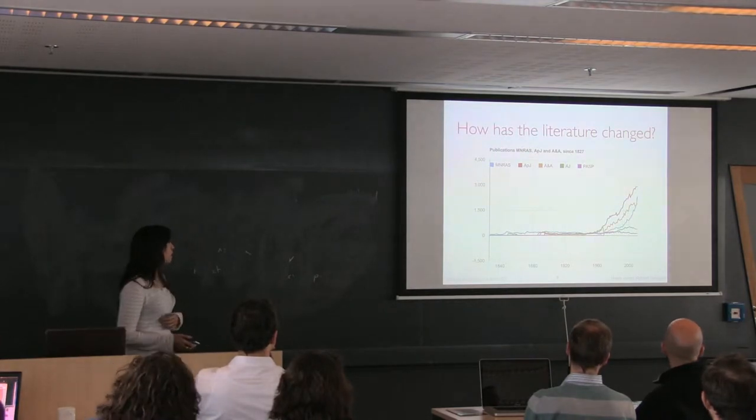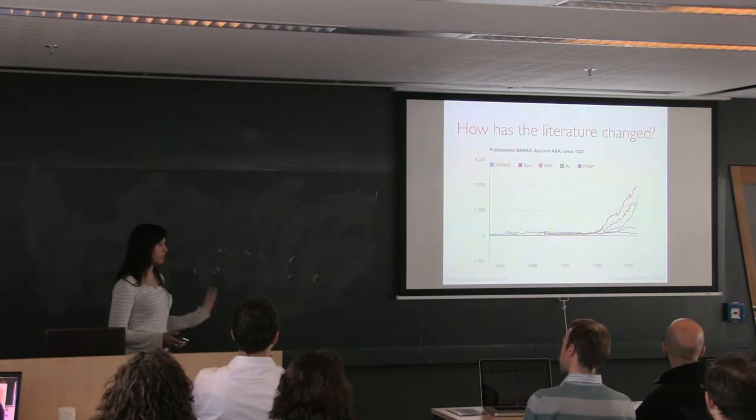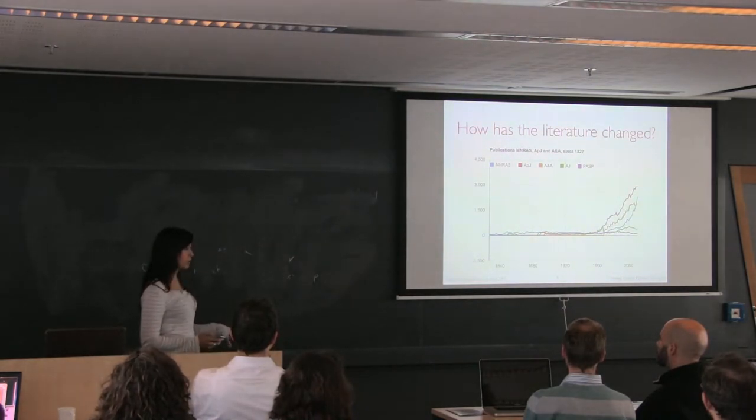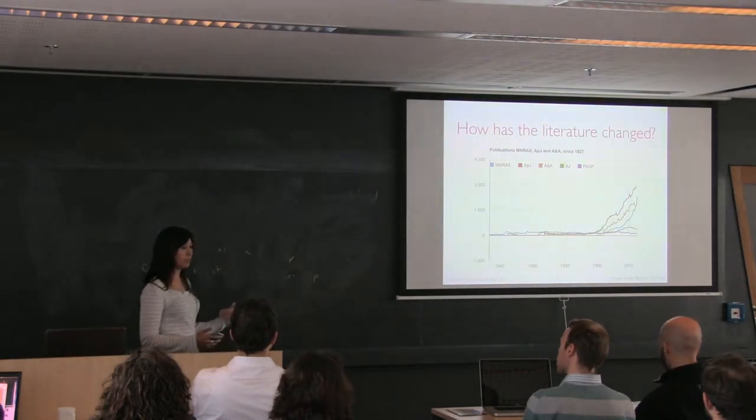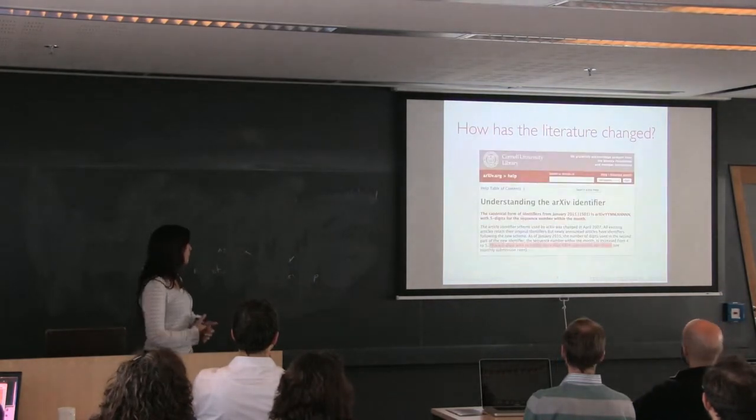We're looking at, I mean, the number of papers that we get every day in Arxiver is anywhere between 50 and 100. Forty is a low day. In fact, I think all of physics, so astro-ph is its own thing, all of physics is less than astronomy. So astronomy itself is also publishing more than other fields like other sciences.